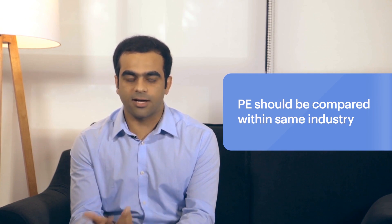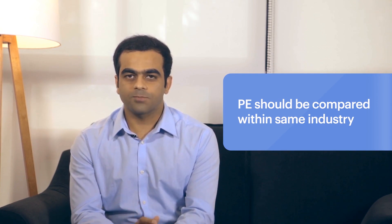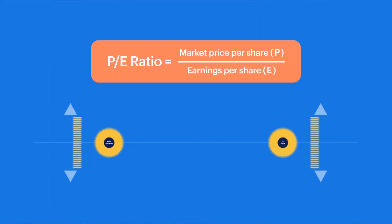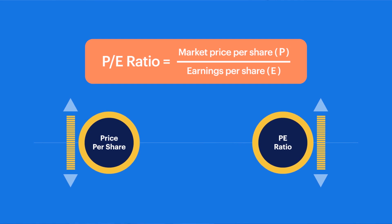You have to know that P-E varies across different industries. As we understood with the dividend yield ratio, if price is very volatile, then dividend yield changes on a daily basis. Similarly, in P-E ratio, price is a factor in the numerator, so if a company's price is very volatile, its P-E ratio will also change a lot on a daily basis.